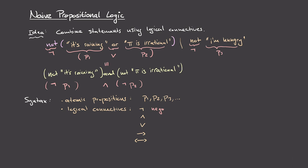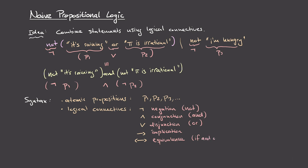So negation will capture the intuitive meaning of 'not'. Conjunction will capture the meaning of 'and'. Disjunction will capture the meaning of an inclusive 'or'. Implication will capture the meaning of the phrase 'A implies B'. And equivalence will capture the phrase 'A if and only if B'. So these are going to be our building blocks for logical formulas in propositional logic.